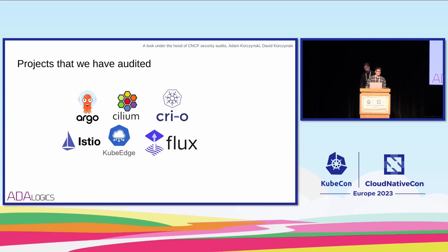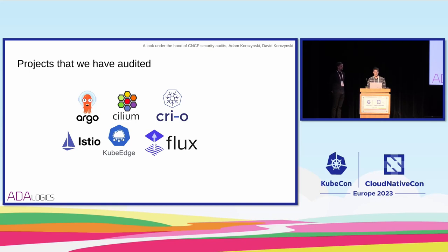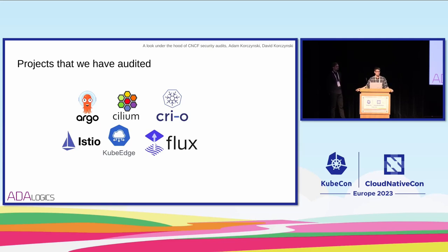The projects that we have audited over the last year — this will be a talk about six audits we have done throughout the last year, maybe a little bit more than a year — and these are the projects: Argo, Cilium, Cryo, Istio, Kubetch, and Flux. We will mainly be speaking out of these, though sometimes we will generalize to a bit more audits because there are more CNCF security audits going on, and there will also be some insights about that.